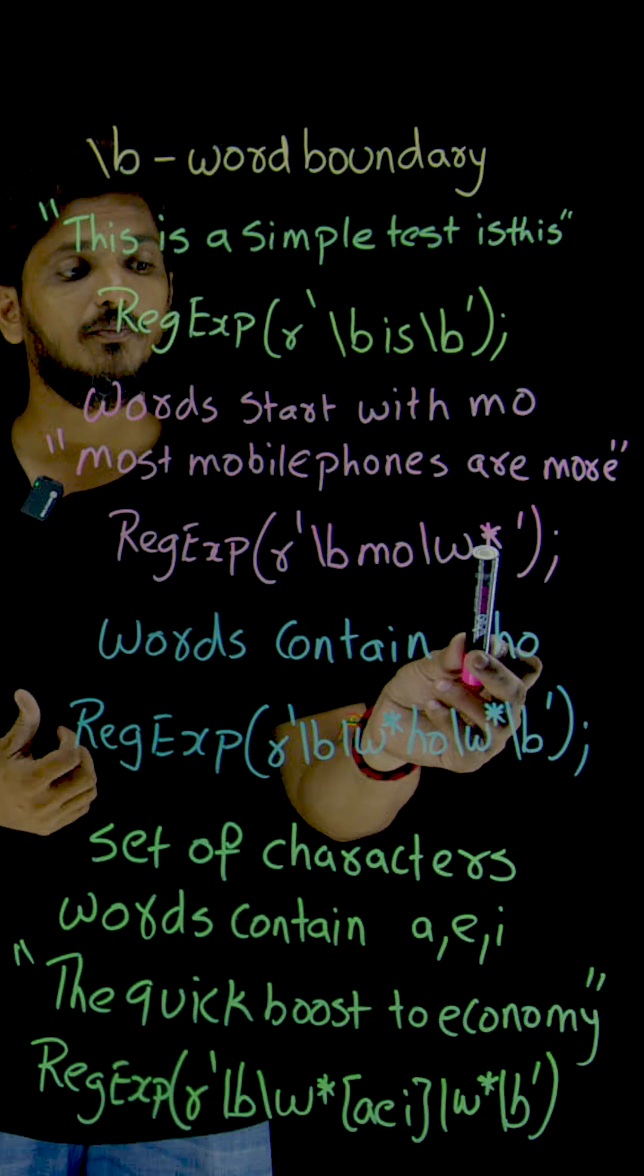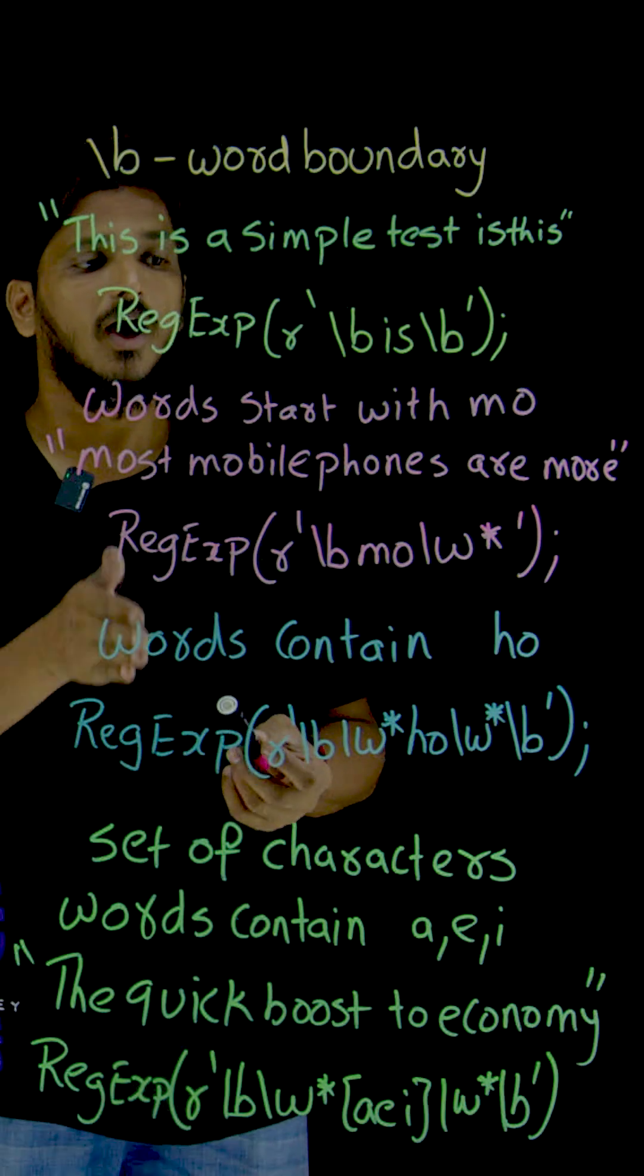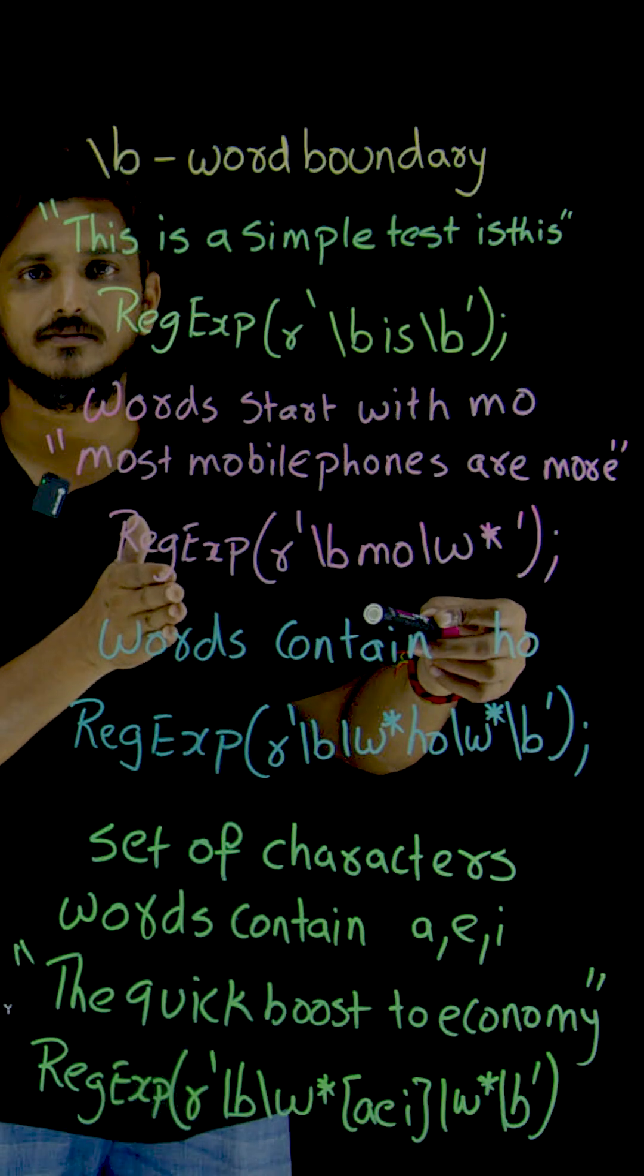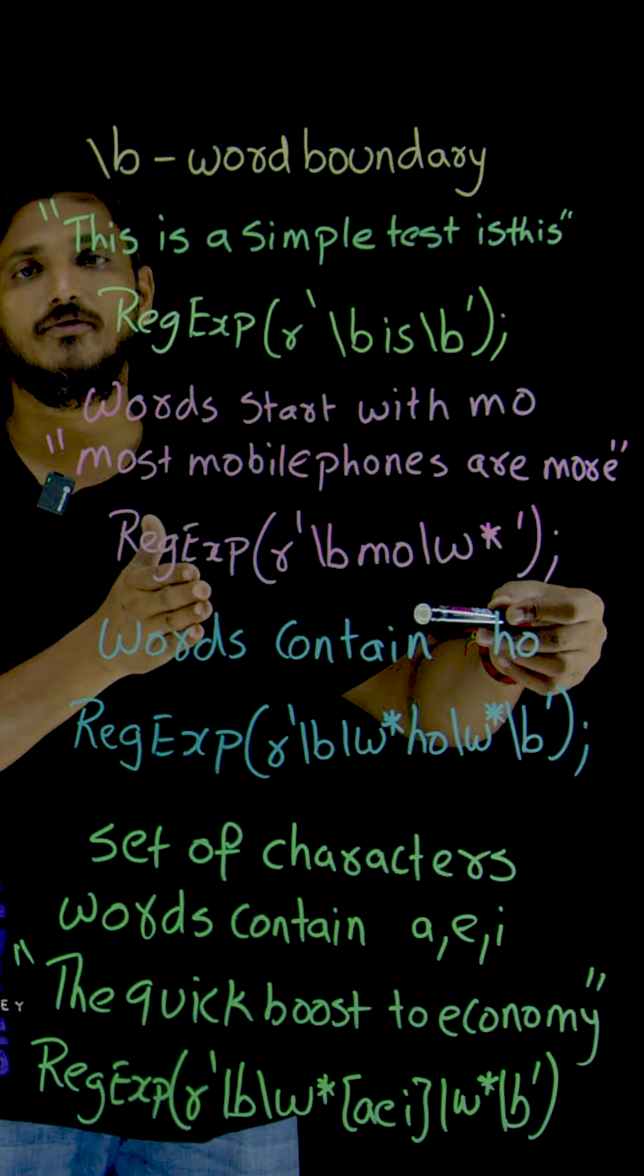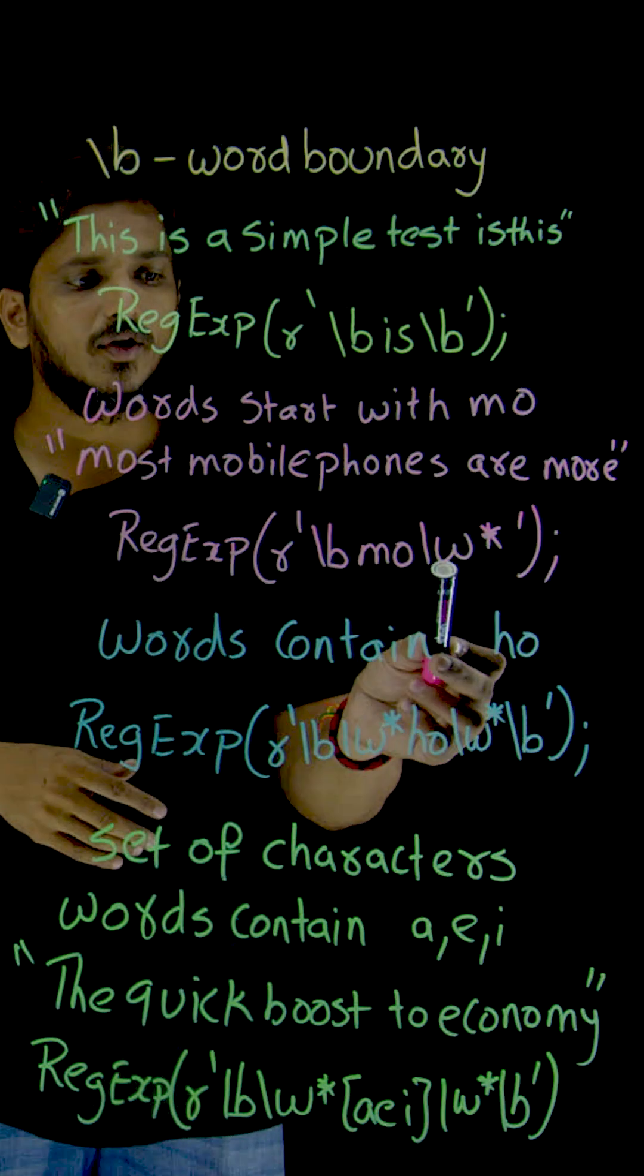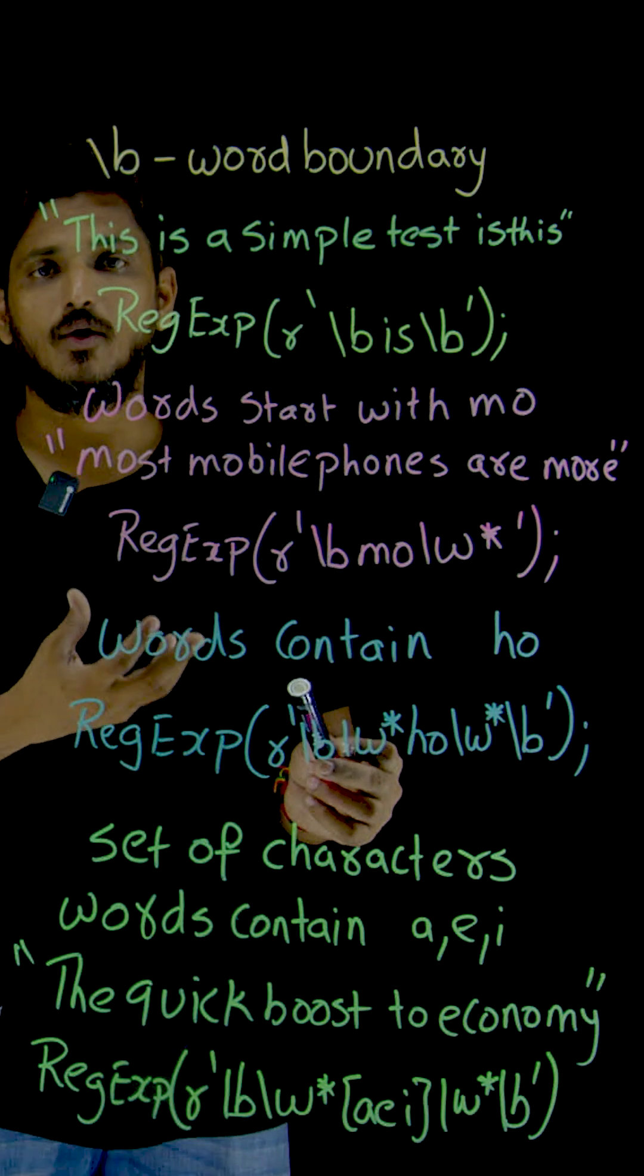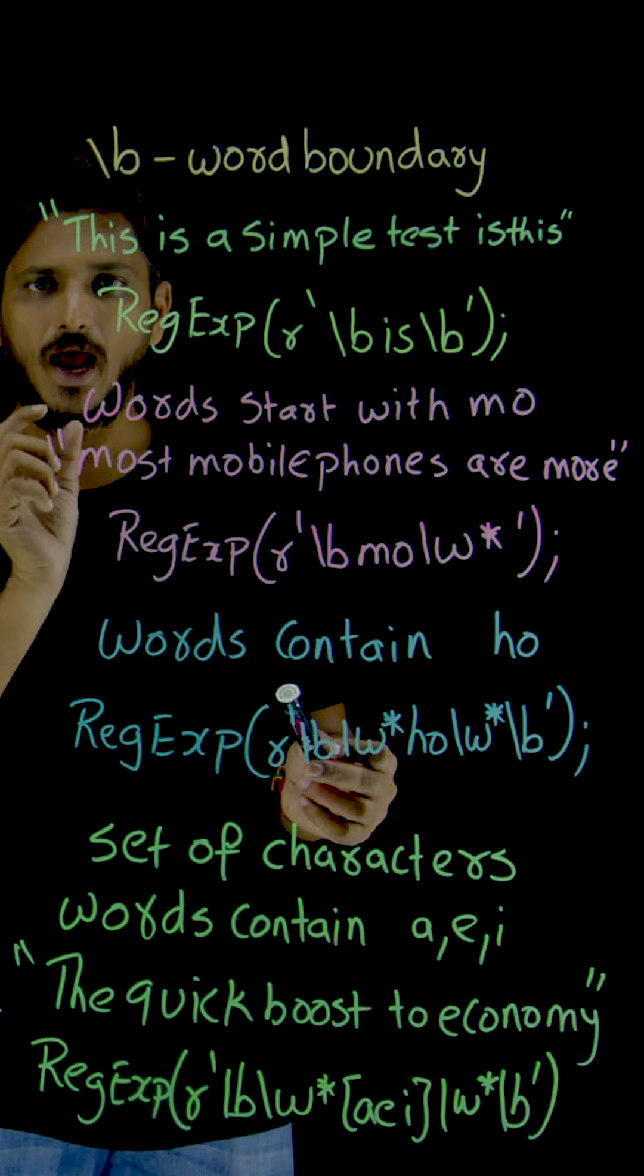In our last class, we used plus. Plus means one or any number of characters. Here, star means zero or any number of characters. Why did we mention star here? Zero means we have only the word M-O.